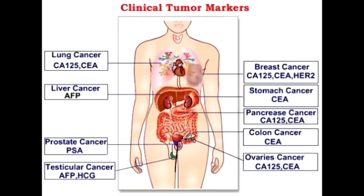Name some conditions in which there would be an increase in beta-HCG. Beta-HCG is commonly increased in pregnancy, but it can also be increased in abnormal conditions such as hydatidiform moles, as well as choriocarcinomas and gestational trophoblastic disease. A way to help you remember HCG: H for hydatidiform moles, C for choriocarcinomas, and G for gestational trophoblastic disease.